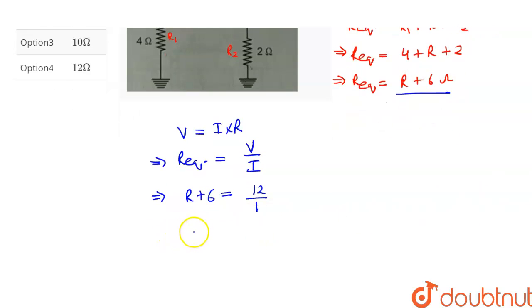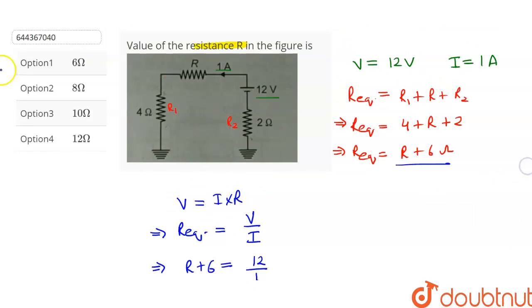And after simplifying this equation, this will give us R is equal to 6 ohms. Now let's check the options. So option number 1 will be the correct answer of this question.